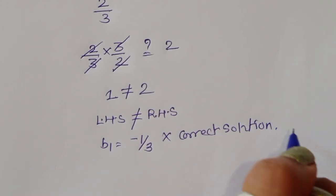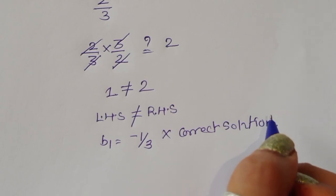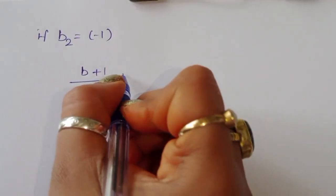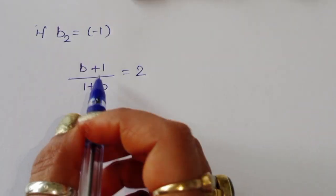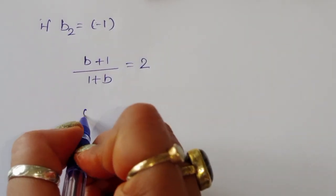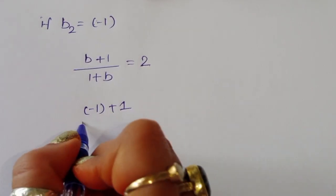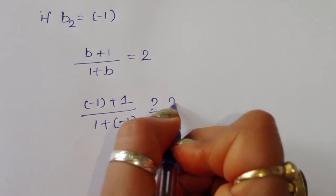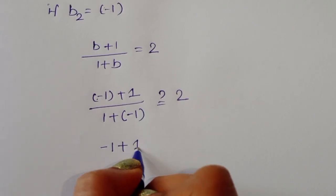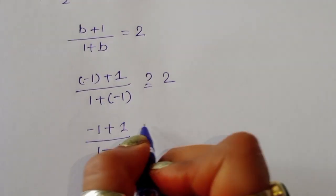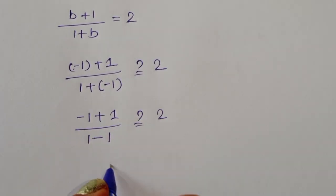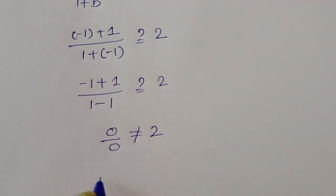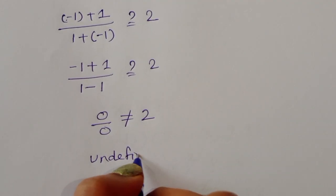Now checking b2 = −1: substituting into (b + 1) / (1 + b) gives (−1 + 1) / (1 + (−1)) = 0 / 0, which is undefined. So b2 = −1 is also an undefined solution.